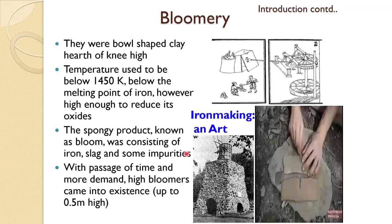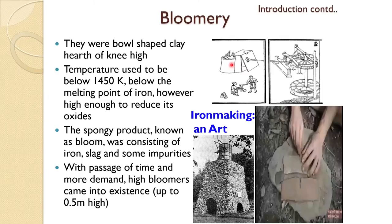The way it started: iron was produced in a bloom, and the place used to be called a bloomery. It had a bowl-shaped clay hearth of knee height. Air was blown through into this pot at a temperature of below 1450 Kelvin — that is below the melting point of iron, but high enough to reduce its oxide. However, the spongy product obtained after reduction of the oxide is not pure, and that is why it is known as bloom, consisting of iron, slag, and some impurities.